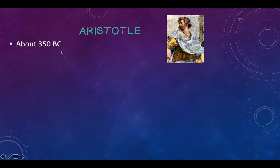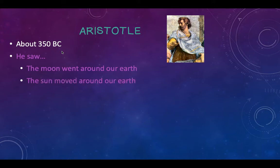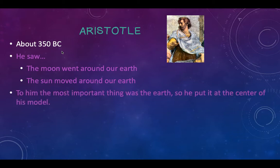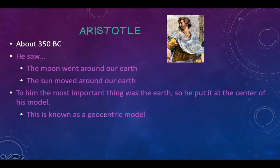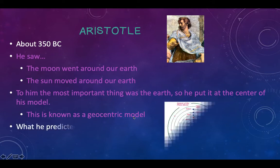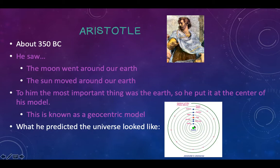Aristotle was around 350 BC. Here's what he observed: the moon went around the earth, and he thought that the sun moved around the earth. So to him, the most important thing in the universe is the earth, and he put it at the center of his solar system model. This is known as a geocentric model — 'centric' because it's in the center, 'geo' from land or earth. He put the earth at the center and then he's got different things like fixed stars and different planets all going around in these different spheres.